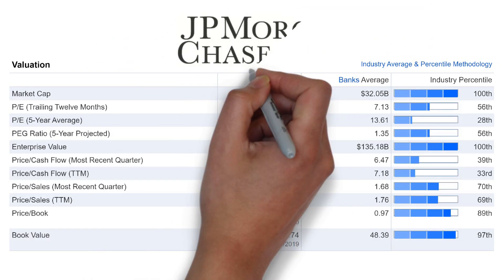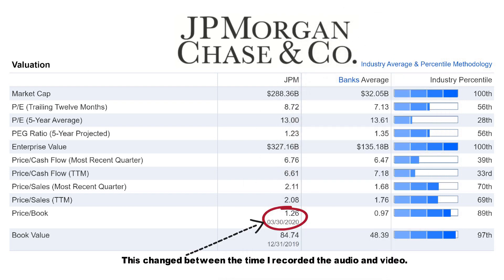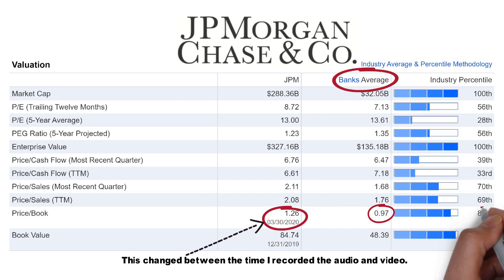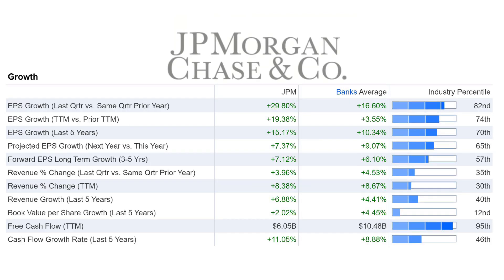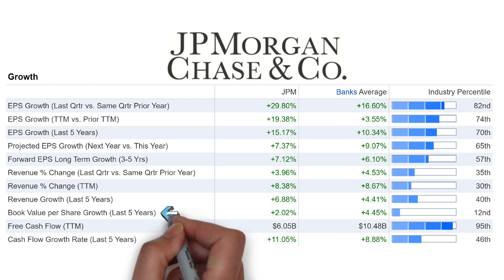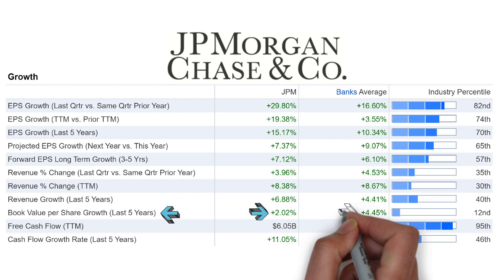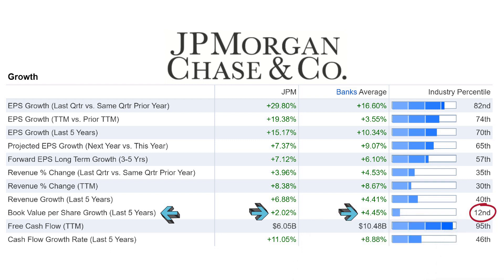Looking at Fidelity.com's research tools for the entire banking industry, they show a price to book of 1.23 as of March 27th — always check dates on websites as they update at different times. The banking sector's average is less than 1 at 0.96, and JP Morgan is at the 89th percentile for the sector, meaning 89% of its competitors have a more favorable price to book ratio. Furthermore, JP Morgan has increased book value by about 2% per year over five years, while the bank average is almost 4.5%, placing JP Morgan at only the 12th percentile for book value growth.